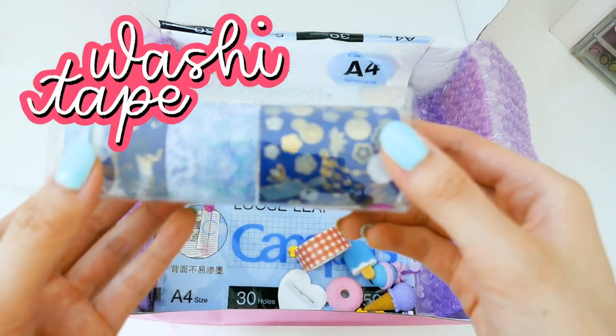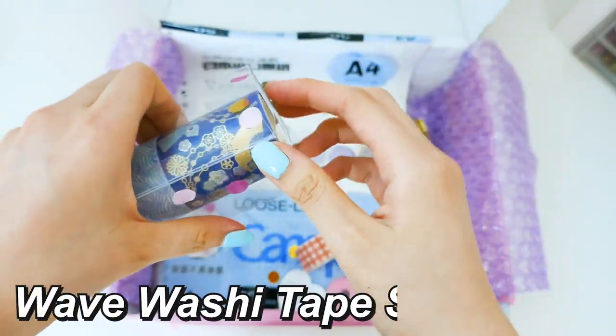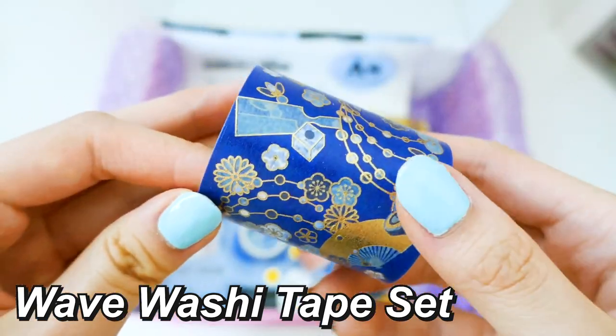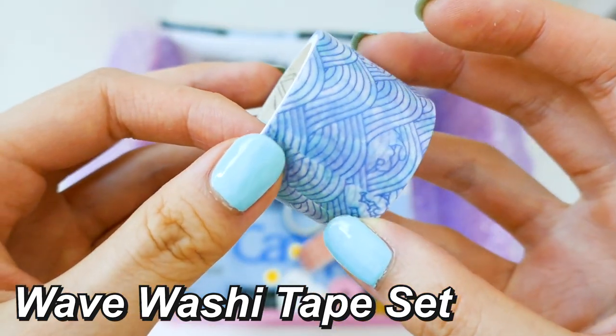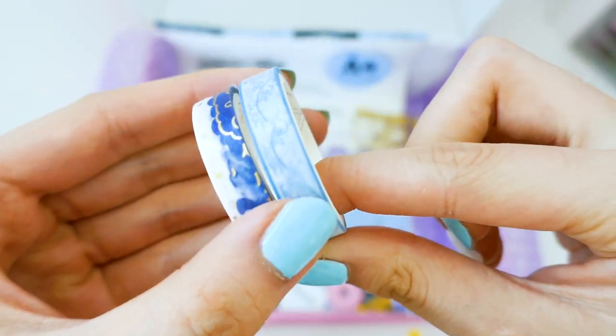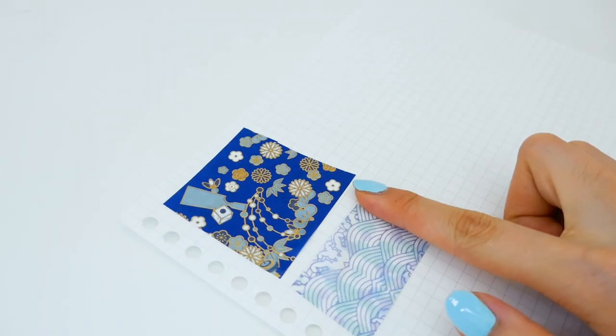And then I bought some washi tape. This is super cool as it comes in a set of 5 and you pay for the entire set. This is the wave theme so it's kind of inspired by like Japanese things. I don't really know. And then this red plaid washi tape that I had to get because of Amanda Rach Lee.